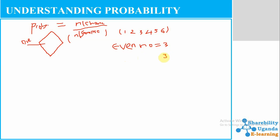So we should be able to understand the even numbers — how many even numbers are we having? We have one, two, three. So even numbers are going to be equal to three. That means the remaining numbers are also going to be equal to three. It is giving us a chance that, in the even numbers, when someone tosses, it is going to bring an even number.